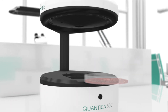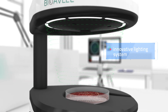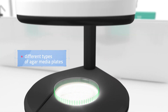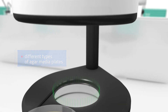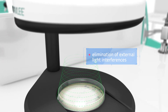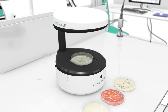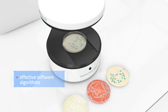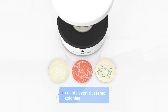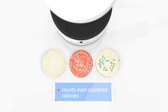Proper illumination is provided by an innovative lighting system with preset configurations for different types of agar media plates and effective elimination of external light interference. Coupled with software algorithms, it enables Quantica 500 to distinguish and count even clustered colonies similar in size and color.